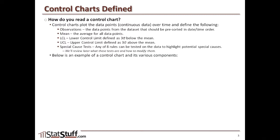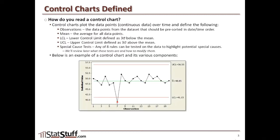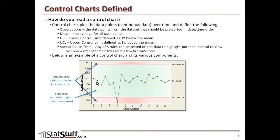Here's what a control chart might look like as an output from Minitab. The region in the middle within the red lines reflects where we might see common cause variation — the area within control, within three standard deviations of the mean. This is the expected variation region. We also have the unexpected variation region, highlighted in red, for things that fall outside.